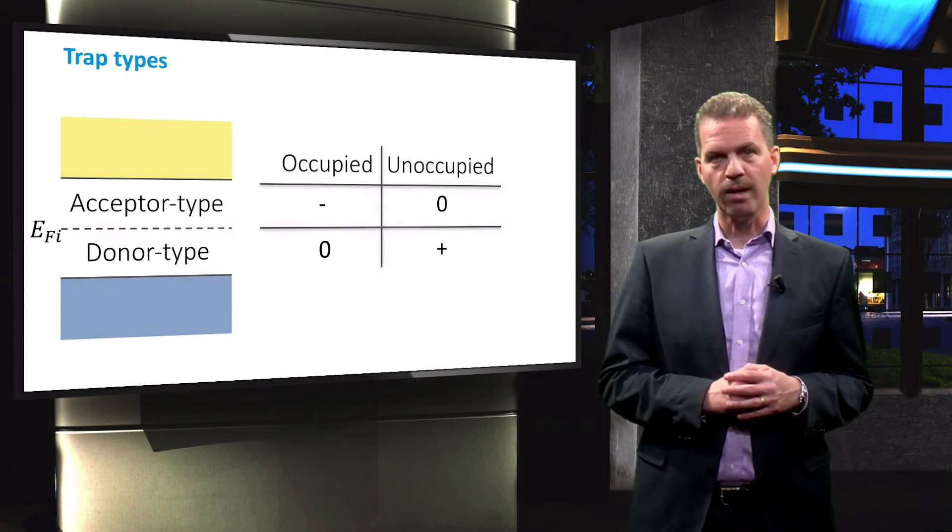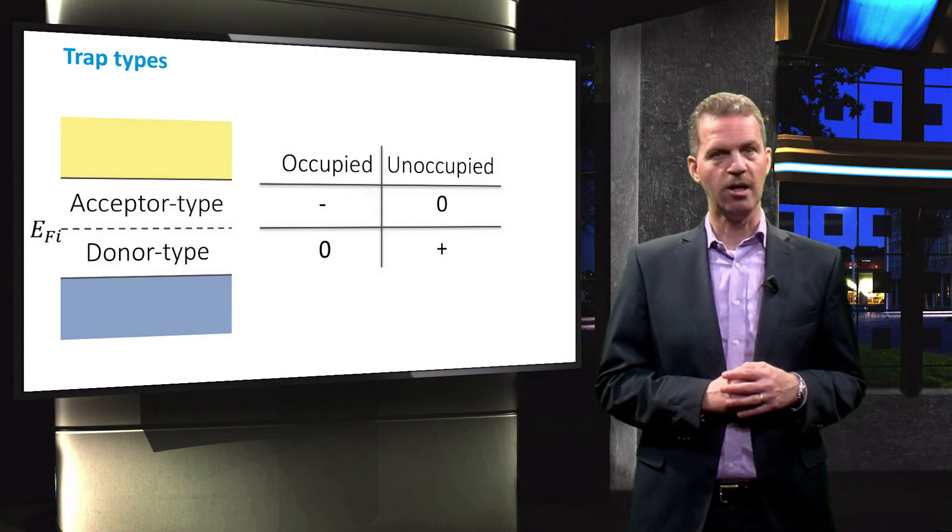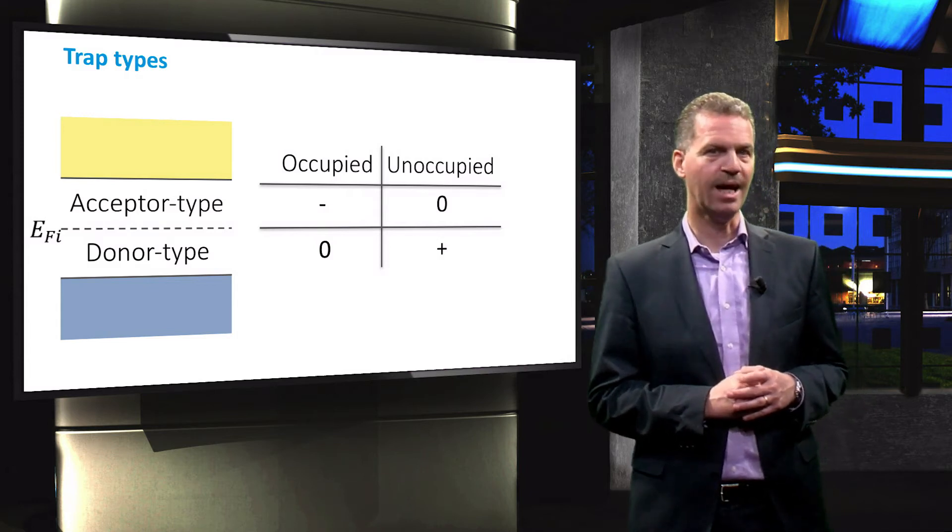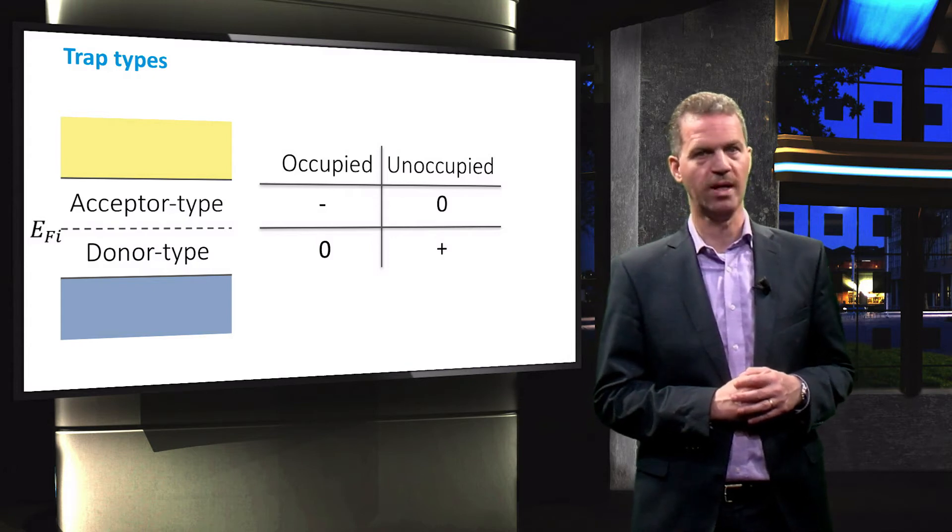We call these traps donor and acceptor-like since the charge state behaves the same as for donor and acceptor atoms.